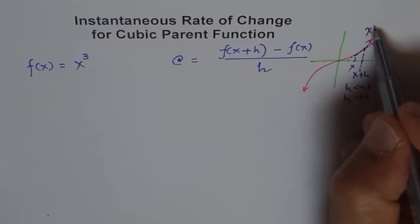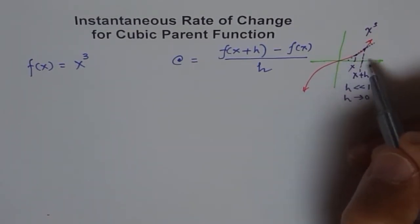Since this is a cubic function, we say it's instantaneous rate of change at any point x. So x is a general point that could be anywhere. We'll derive a general formula for this.